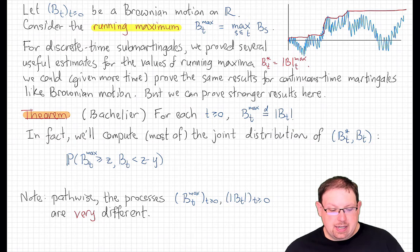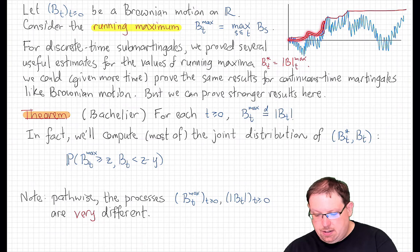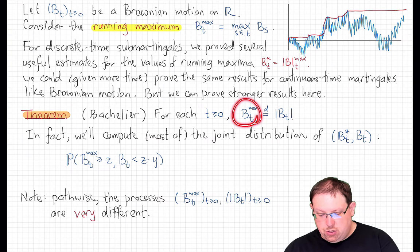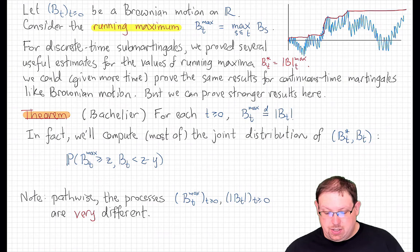Here is the key result I want to show right now, which is sometimes called Bachelier's principle, after Bachelier who proved it. It states that the running maximum of Brownian motion, at each time, has the same distribution as the absolute value of Brownian motion — a very surprising result given how different their path properties are.